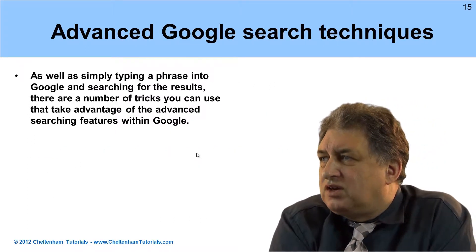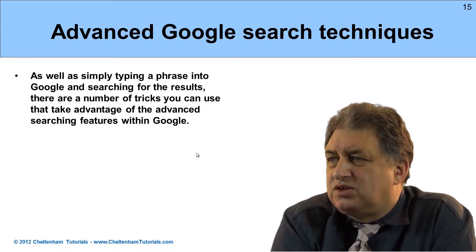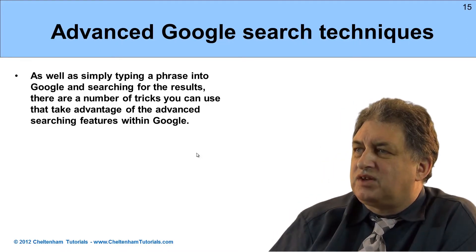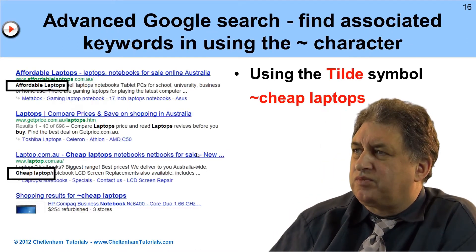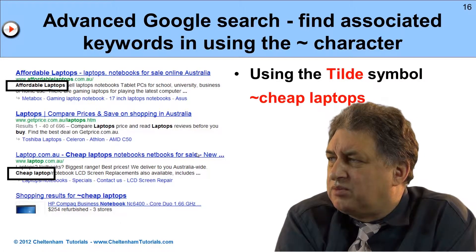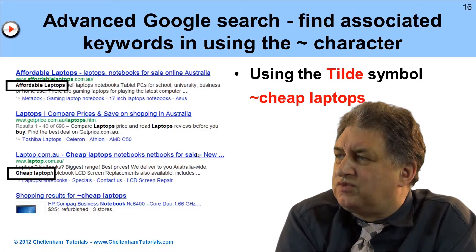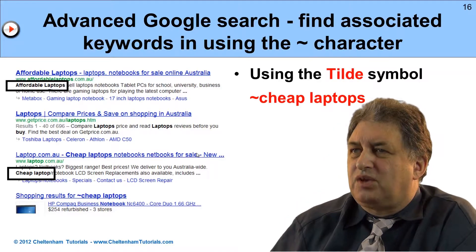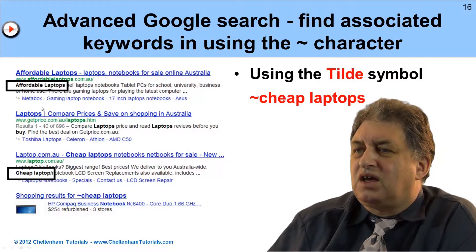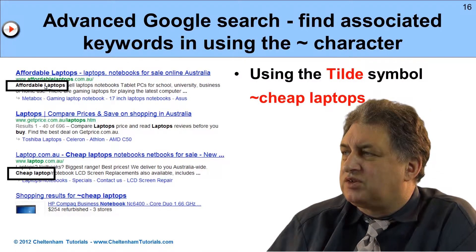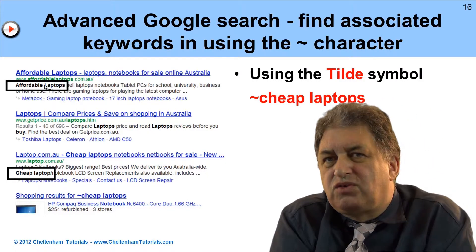There are various Google search techniques you can use. For instance, you can use the tilde symbol. Within Google, if you search for tilde followed by 'cheap laptops,' as you can see in this example, as well as the word 'cheap,' Google also highlights things like 'affordable' or 'inexpensive.' Google is getting smarter by the day and knows about related words.